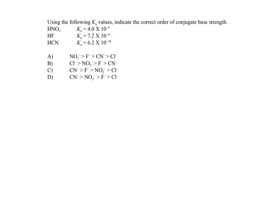Looking at the same concept here, using the following Ka values, indicate the correct order of conjugate base strength. These are Ka values, meaning they're associated with acids, but we're looking at the conjugate bases. Same concept. Stronger the acid, the weaker the conjugate base. We can tell acid strength by looking at the Ka values. HNO₂ is 4.0×10⁻⁴, HF is 7.2×10⁻⁴, and HCN is 6.2×10⁻¹⁰.